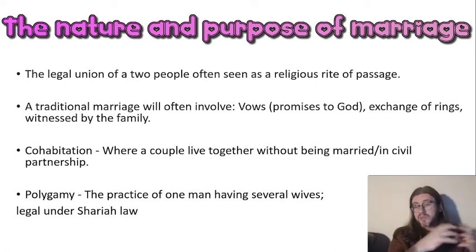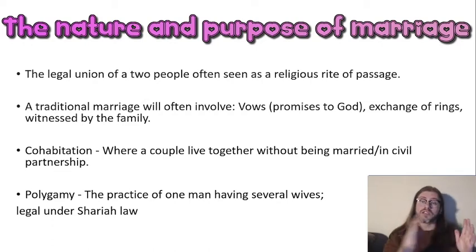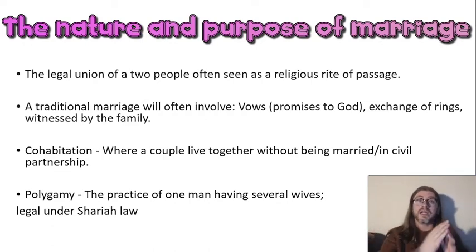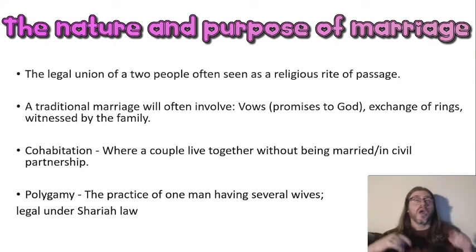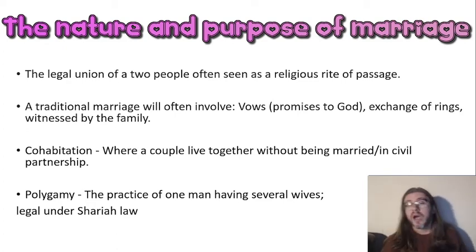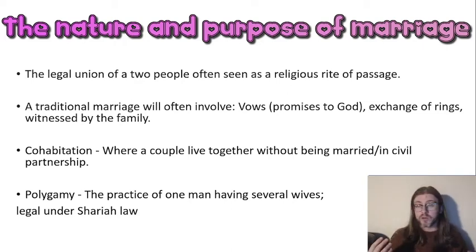Polygamy - poly just means many. So if someone is in a polyamorous relationship, they're in a relationship with many people. Those are legal - you can legally be in relationships with many people in this country. What you can't legally do is marry multiple people. In our country you can only marry one person. However, in some Muslim countries under Sharia law, Muslim law, it is allowed to marry multiple people.